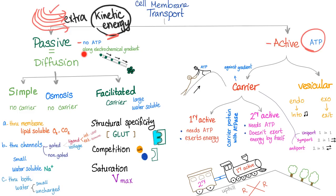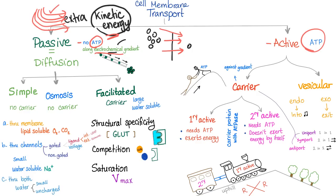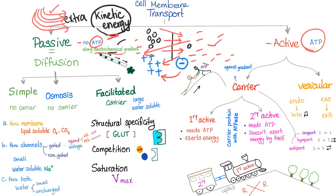Passive movement is along the electrochemical gradient. 'Electro' means electrical, 'chemical' means concentration. If you have more substance on one side of a membrane and less on the other, movement goes from higher concentration to lower concentration — that's diffusion. No ATP needed, so it's passive, along the gradient. For electrical gradient: if everything on one side is positive and there's a negative ion nearby, it's attracted toward the positive side. That's the electrical component of the electrochemical gradient.